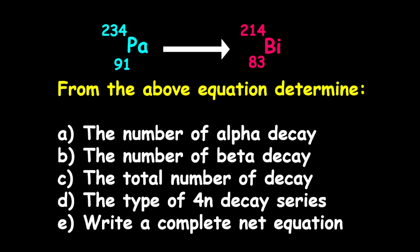Hello everyone, how are you doing? Today we are looking at a radioactive decay series question. What we have is a portion of a decay series starting from protactinium 234 into bismuth 214.